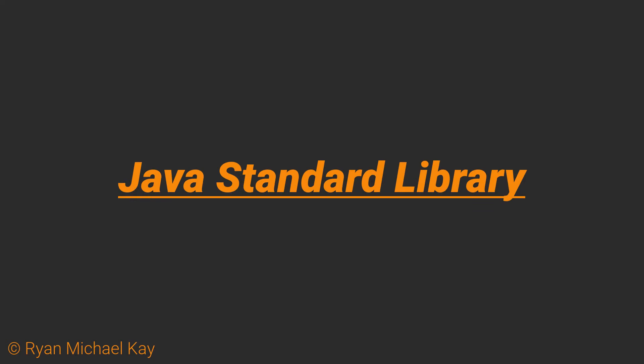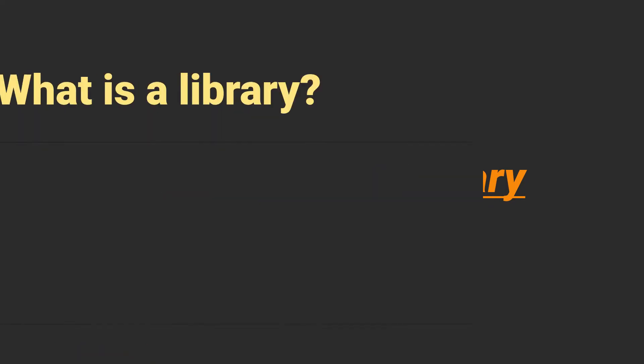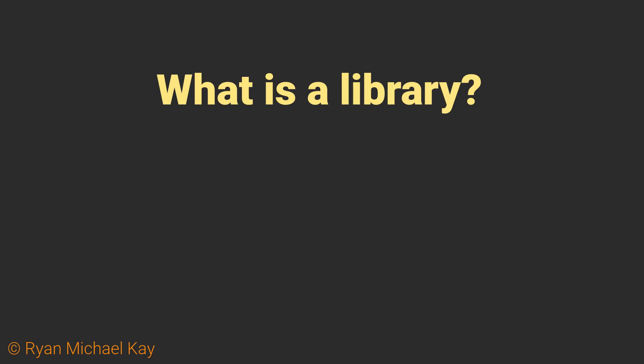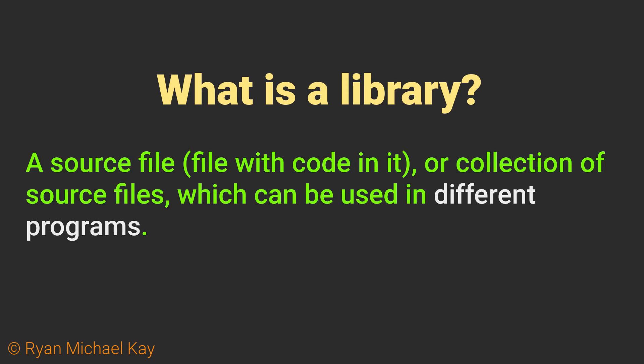One of the interesting characteristics of computational logic is that it is very often interchangeable across different programs. This is especially true when the problems you're working with can be solved using only primitive types and reference types which come from the Java standard library. A library is essentially some source file or set of source files which you can use in other programs, such as your own.